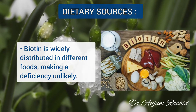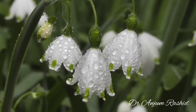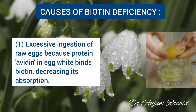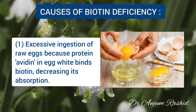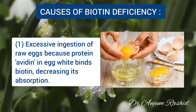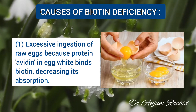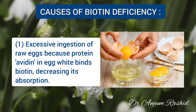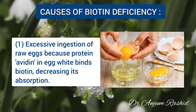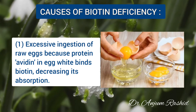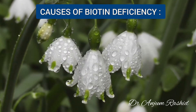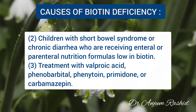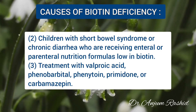Regarding dietary sources, biotin is widely distributed in different types of food, making a deficiency unlikely. However, biotin deficiency may result from excessive ingestion of raw eggs, because the protein avidin — present in the egg white — binds biotin and decreases its absorption.